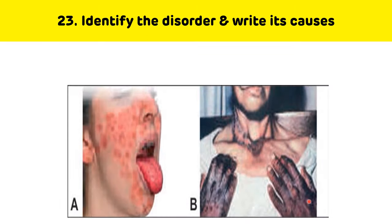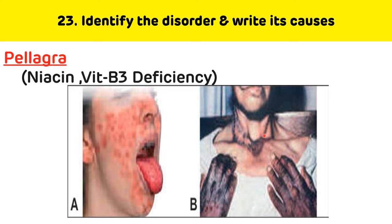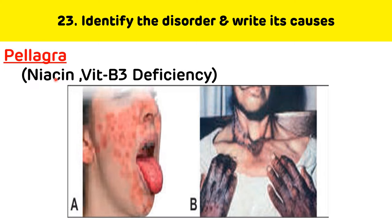Identify the disorder and write its causes. This case is associated with the deficiency of niacin, which causes pellagra. Pellagra is characterized by the three Ds: diarrhea, dementia, and dermatitis. There is a characteristic Casal's necklace. So this is pellagra, which occurs due to deficiency of niacin.